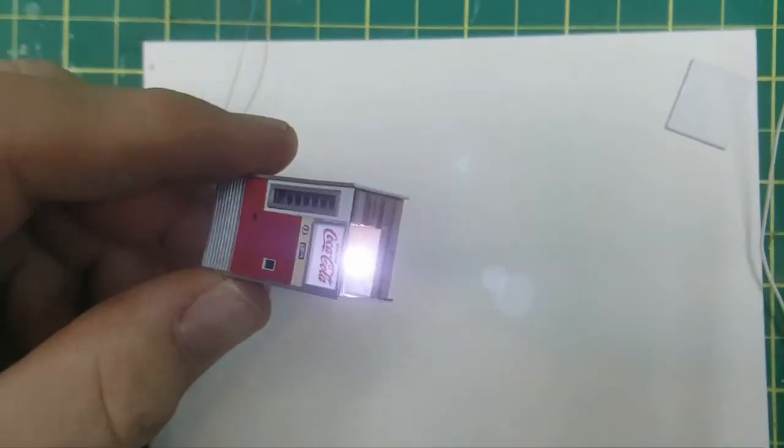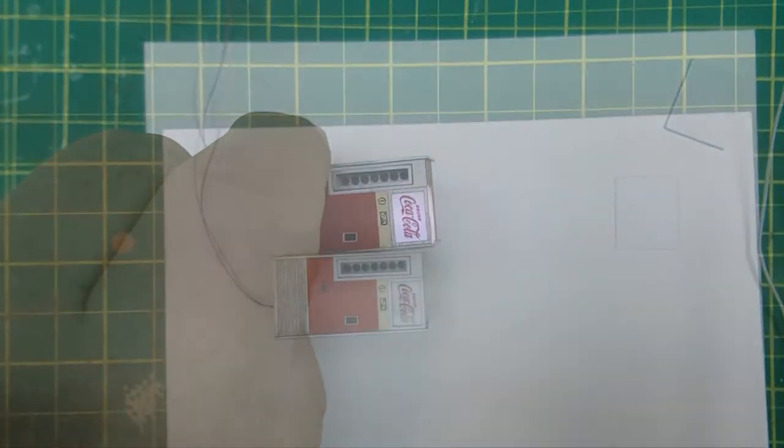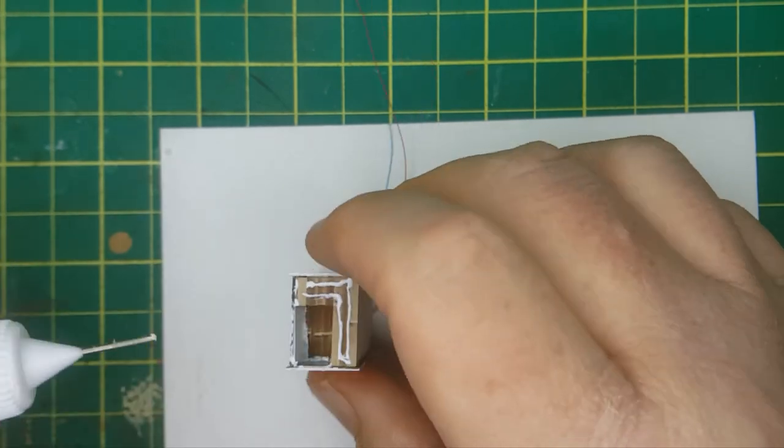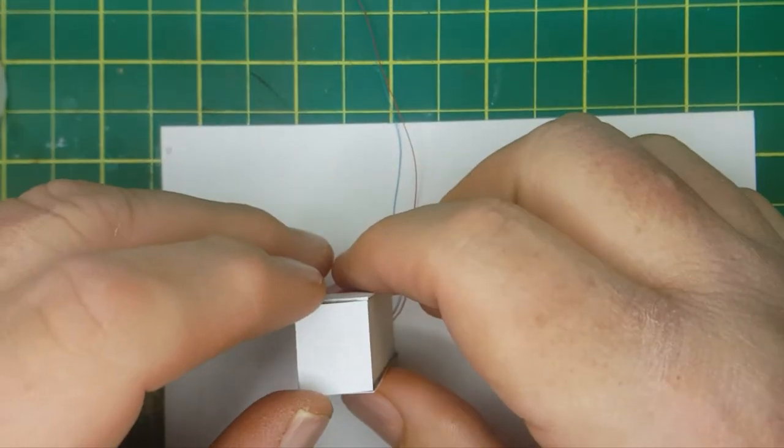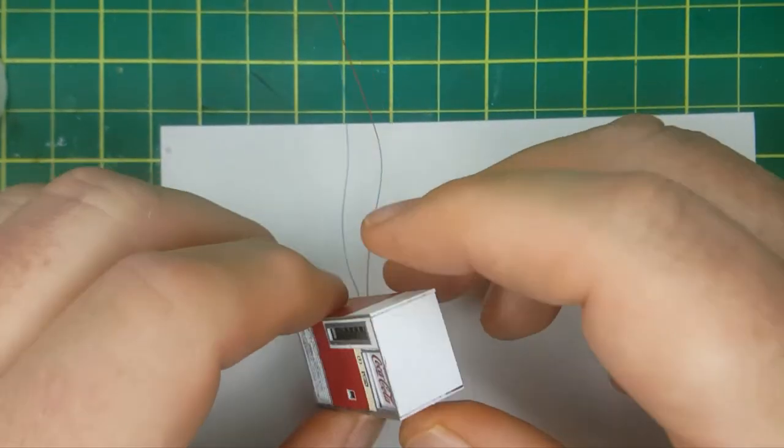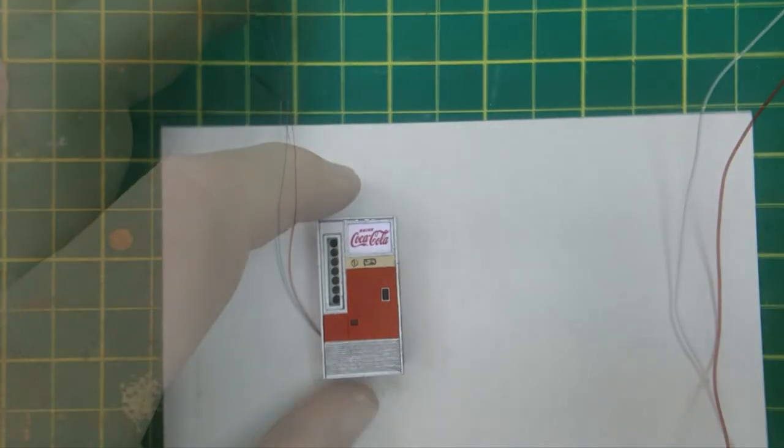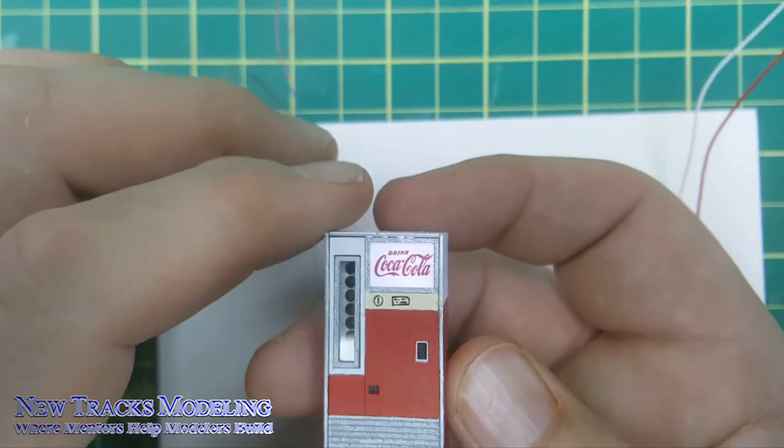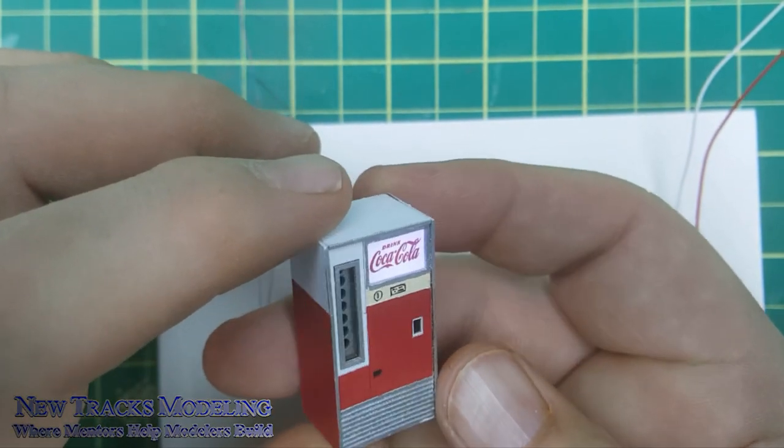Test your LED and check for any light bleed around seams and edges. Now button things up by gluing the top panel in place. Now, stand back and admire your work. Then find a special place for your masterpiece on your layout.